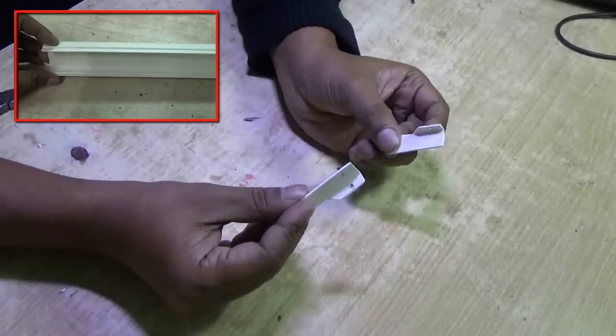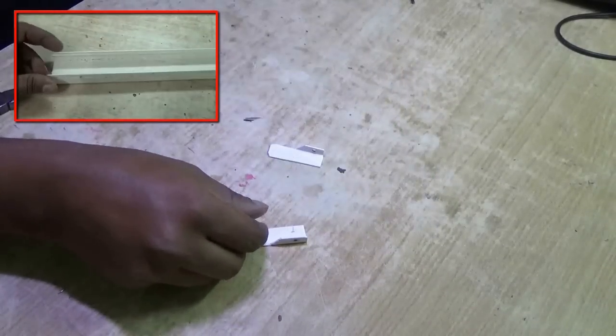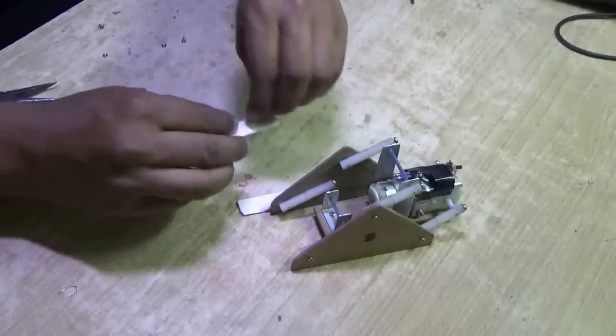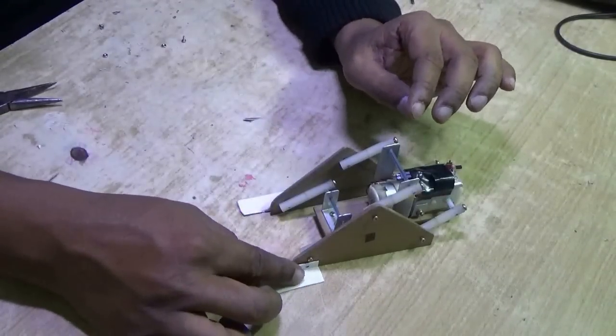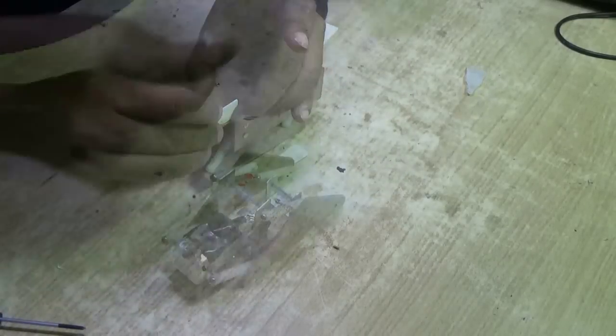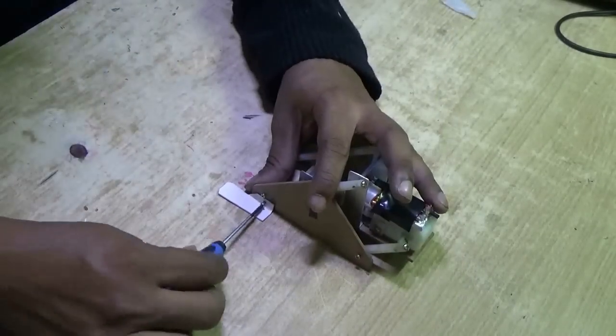Now you need two plastic clamps like this, which I have cut from a plastic casing. Glue that on both sides of the cardboard leg. I have used super glue and then secure it with a small screw.